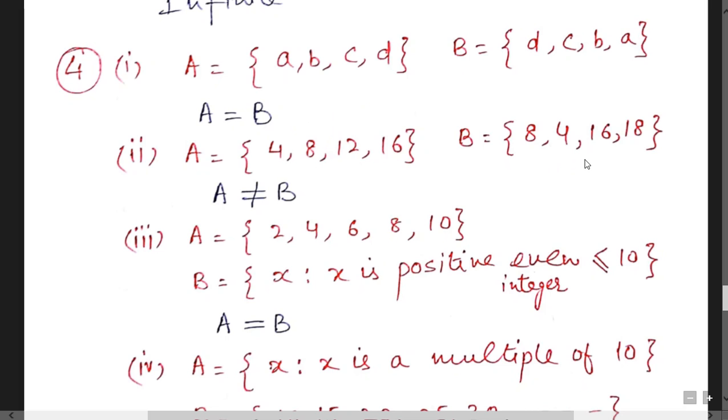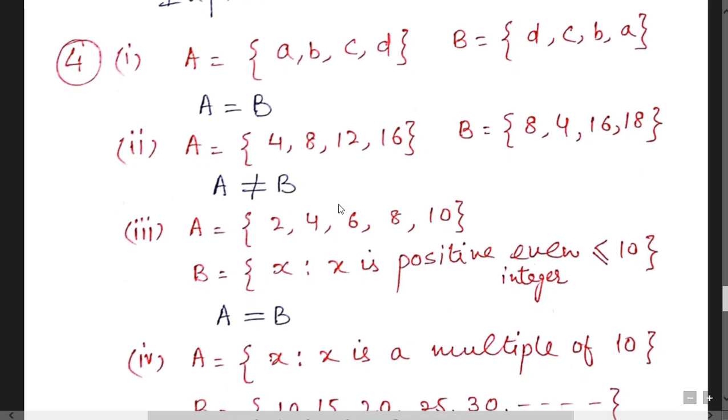4, 8, 12 and 16. 4, 8, 16 and 18. Elements are different. It means sets are not equal.